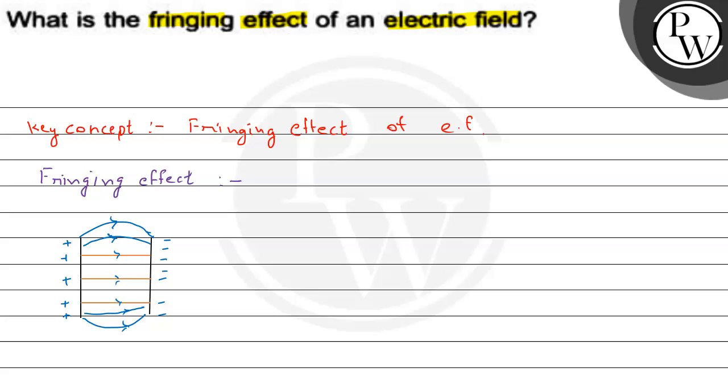Fringing effect. As we know, in a charged capacitor at the edge the electric field slightly bends. So, this bending of the electric field at the edge in a capacitor is known as the fringing effect of electric field.